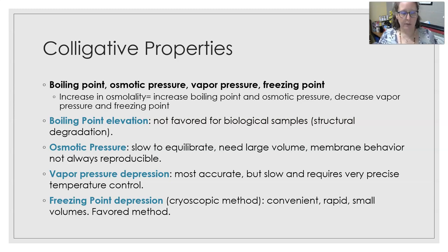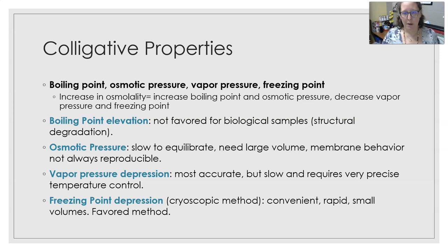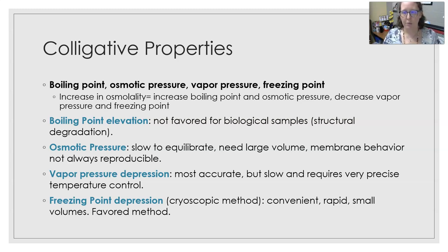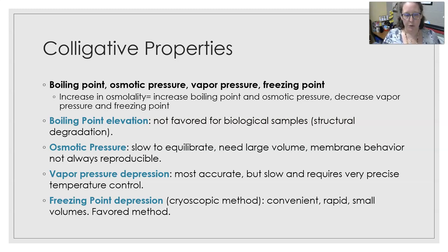So why did we settle on freezing point depression? Boiling point elevation was not favored for biological samples because you get structural degradation — as you boil a sample, you destroy all the proteins. Osmotic pressure is slow to equilibrate, requires large volumes, and membrane behavior is not always reproducible, so it's more prone to errors. Vapor pressure depression is the most accurate, but it is slow and requires very precise temperature control. Freezing point depression, also known as the cryoscopic method, is convenient, rapid, and only requires small volumes — therefore, that's the favorite method.